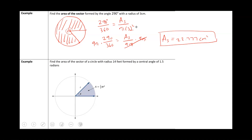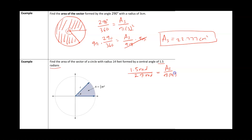Next example: find the area of the sector of a circle with radius 14 feet defined by a central angle of 1.5 radians. Because our angle is in radians, we don't use 360; instead we use 2 pi radians. So we set up: 1.5 over 2 pi equals the area of the sector divided by pi r squared, where the radius is 14 feet.